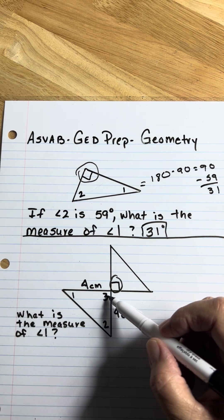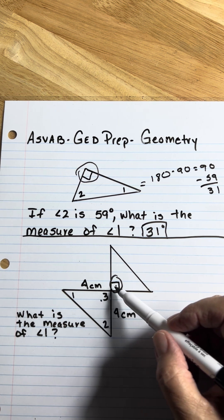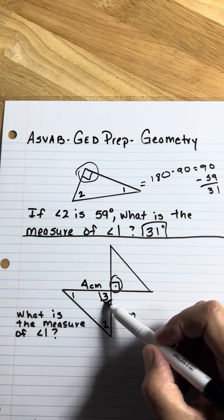Vertical angles, which is what this angle and number 3 are, those are congruent. So if this one is 90, this one is 90.